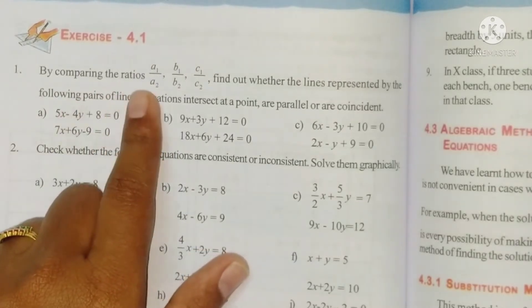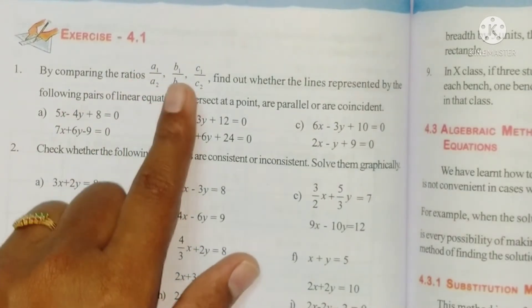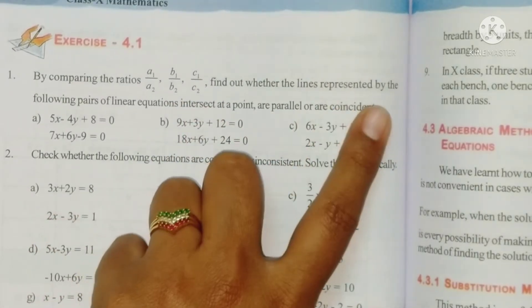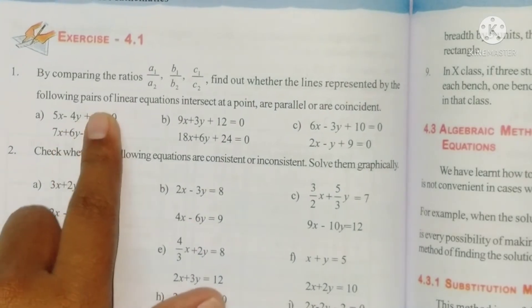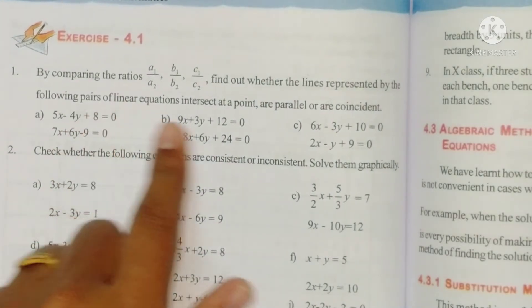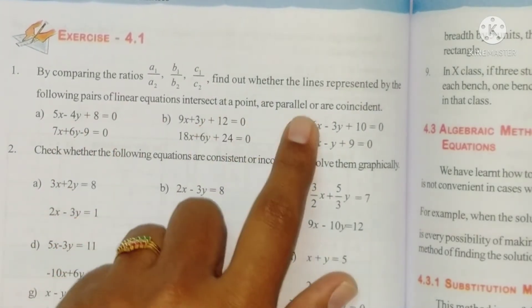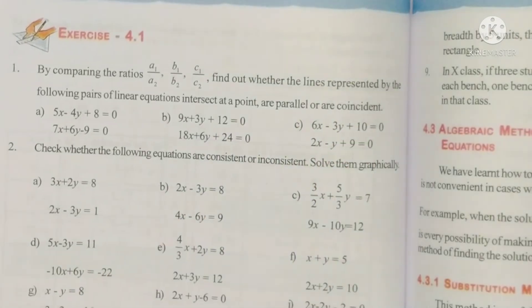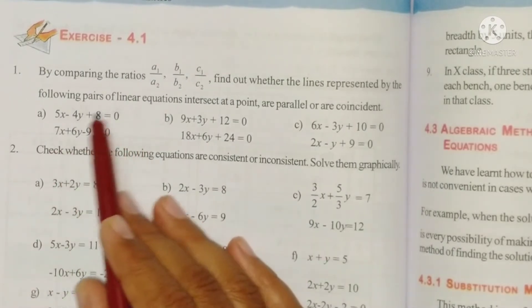By comparing the ratios a1 by a2, b1 by b2, c1 by c2, find out whether the lines represented by the following pairs of linear equations intersect at a point, are parallel, or coincident.